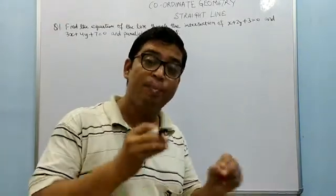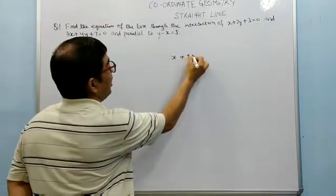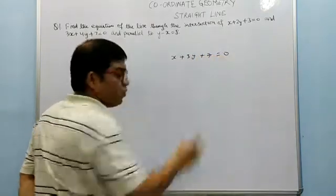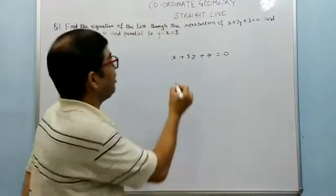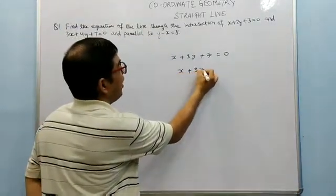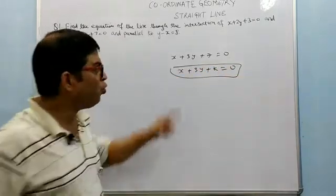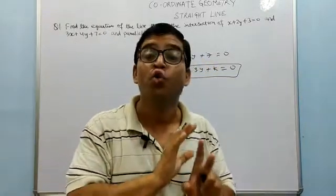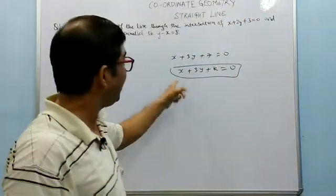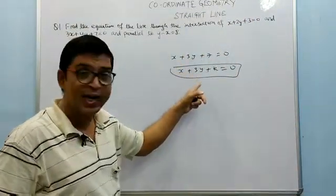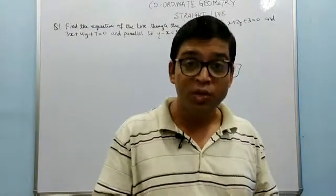Now we will see: if we have to find a line parallel to a given line — suppose the line is x plus 3y plus 7 equal to zero — any line parallel to this can be taken as x plus 3y plus k equal to zero. The technique is: just change the constant term, do not touch the coefficients of x and y. For a particular value of k we get the particular parallel line.